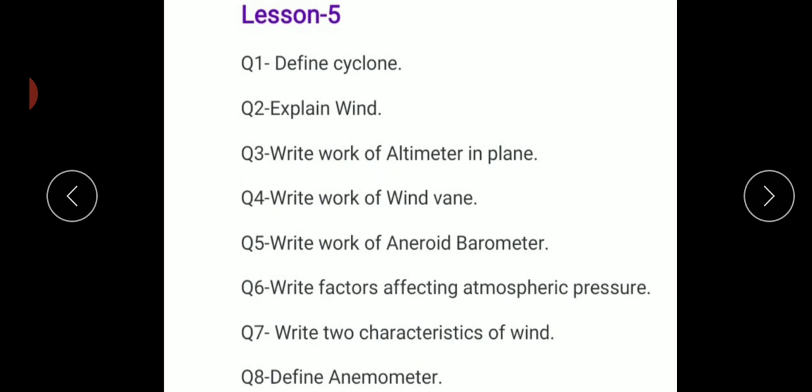Work of aneroid barometer. The aneroid barometer's first work is it is used for atmospheric pressure. It is very easy to carry because it is not having any mercury in it, and a needle is attached to the spring which moves according to the pressure. It's used for a number of purposes.